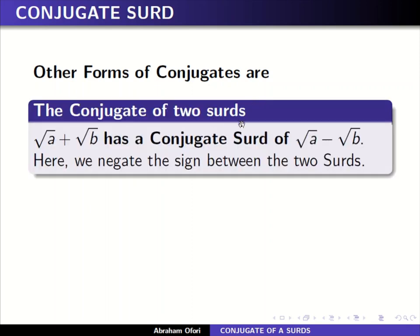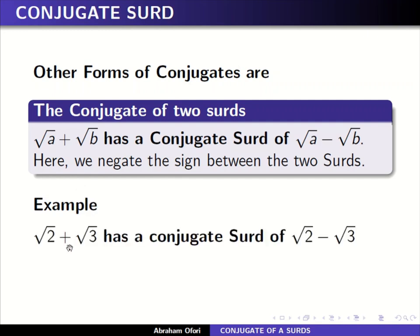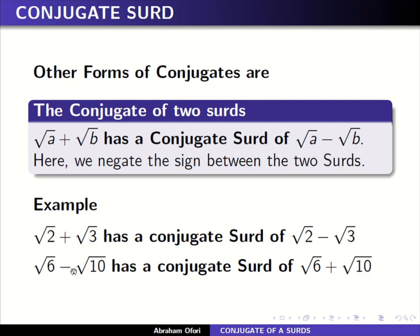Other forms of conjugates: the conjugate of two surds. If you have two surds adding or subtracting, the conjugate of a surd giving us square root of a plus square root of b is square root of a minus square root of b. We just negate the sign between the two surds, changing it from positive to negative or negative to positive. For example, two square root of two plus square root of three has a conjugate of two square root of two minus square root of three. And square root of six minus square root of ten has a conjugate surd found by just changing the sign.